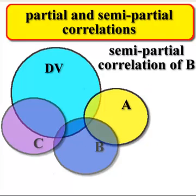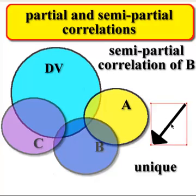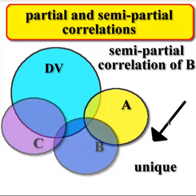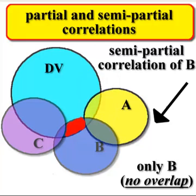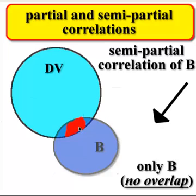So a semi-partial correlation of B goes like this. It's almost the same thing, but it wants the unique contribution of B by itself. So it's just this little chunk right in here with no overlap included. So that little chunk right in here is your semi-partial. Semi-partials, you do not overlap B with anything else. So it's just that little tiny chunk there, and you're only talking about maybe 3% of the variance being explained. Not very helpful.